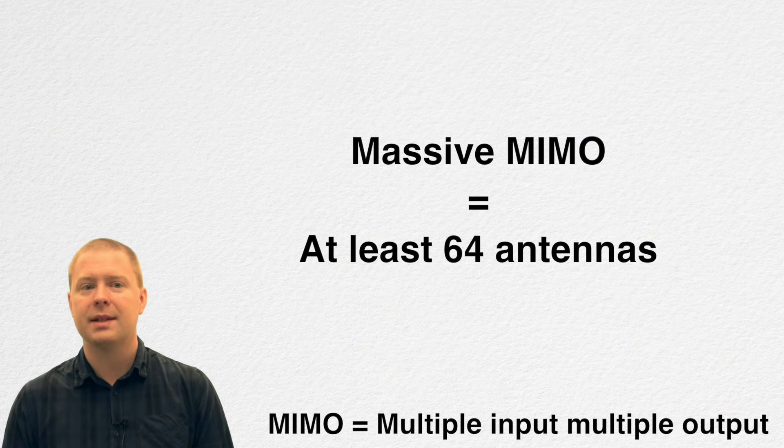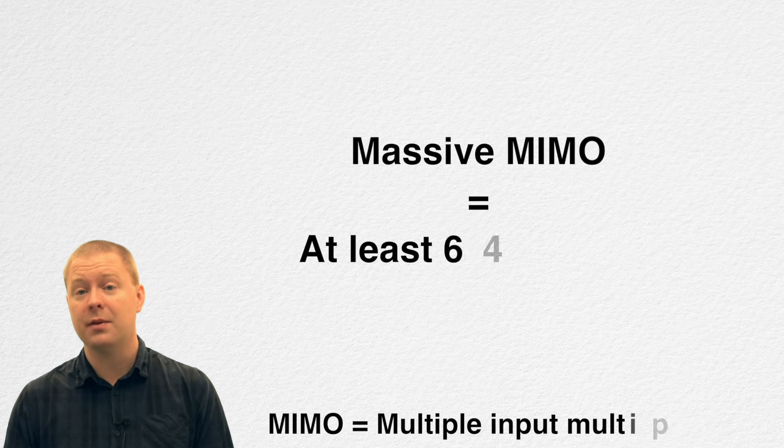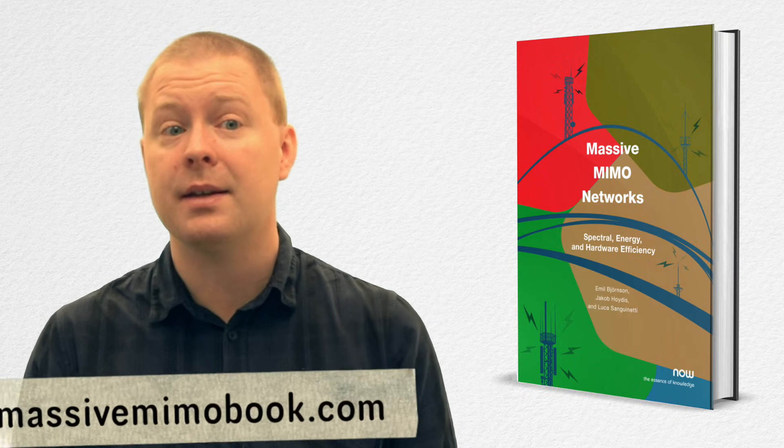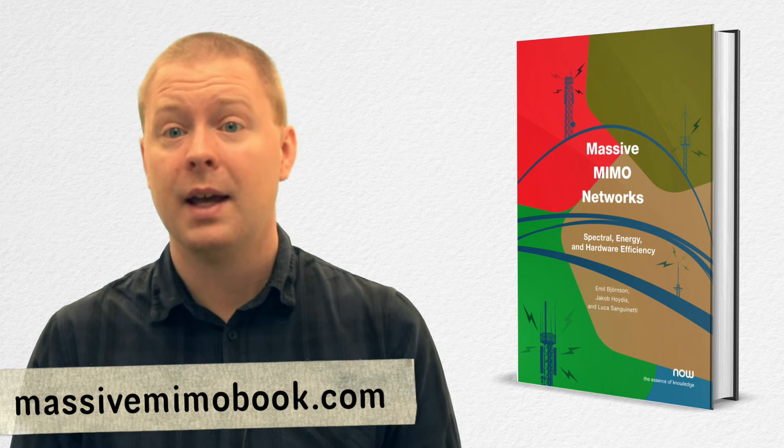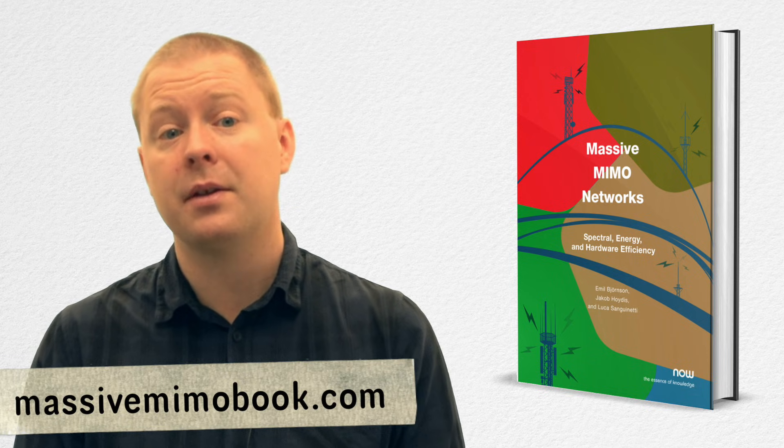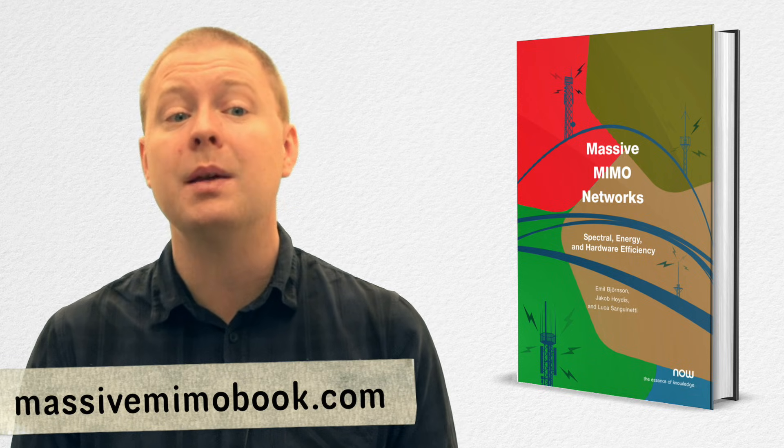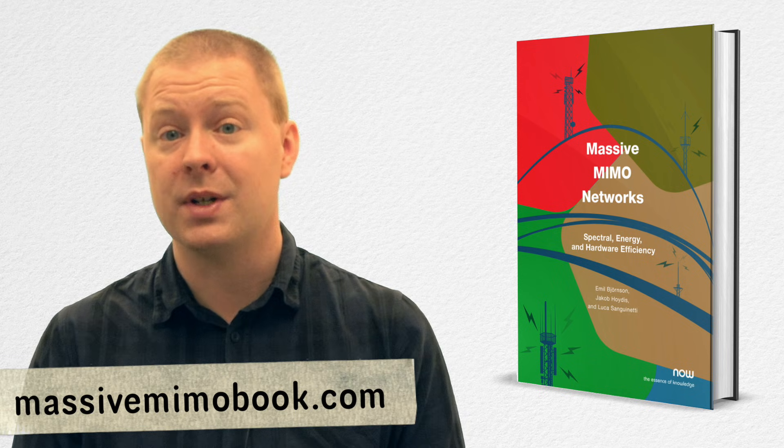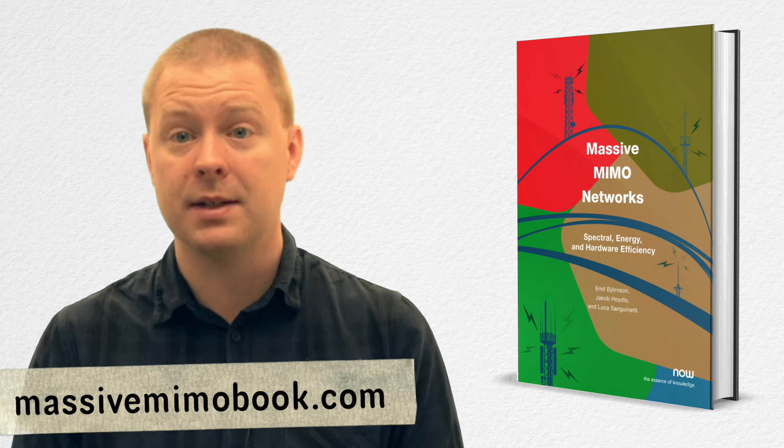We call these big arrays with 64 antennas massive MIMO. If you would like to learn more about massive MIMO, you can read my book, Massive MIMO Networks. You can download a free PDF of it at massivemimobook.com. In particular, section 7 provides the theoretical details of antennas, beam properties, array design, polarization, and other things that I've covered in this video.